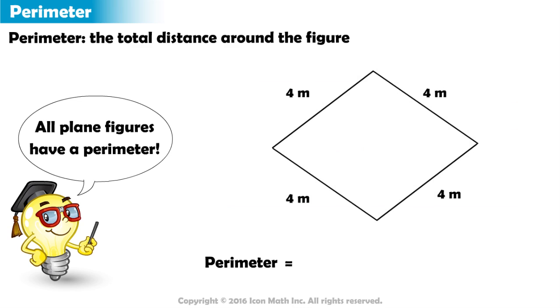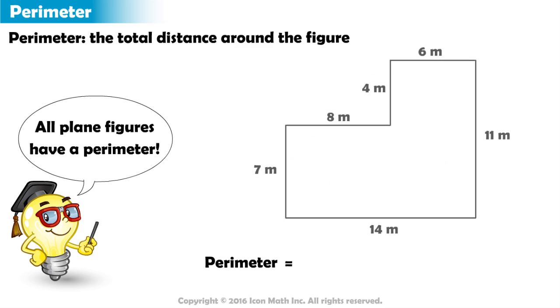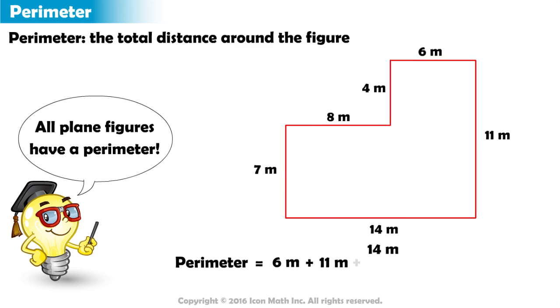This rhombus has a perimeter, and it is equal to the total length of its sides. And this figure also has a perimeter, and it is equal to the total length of its sides.